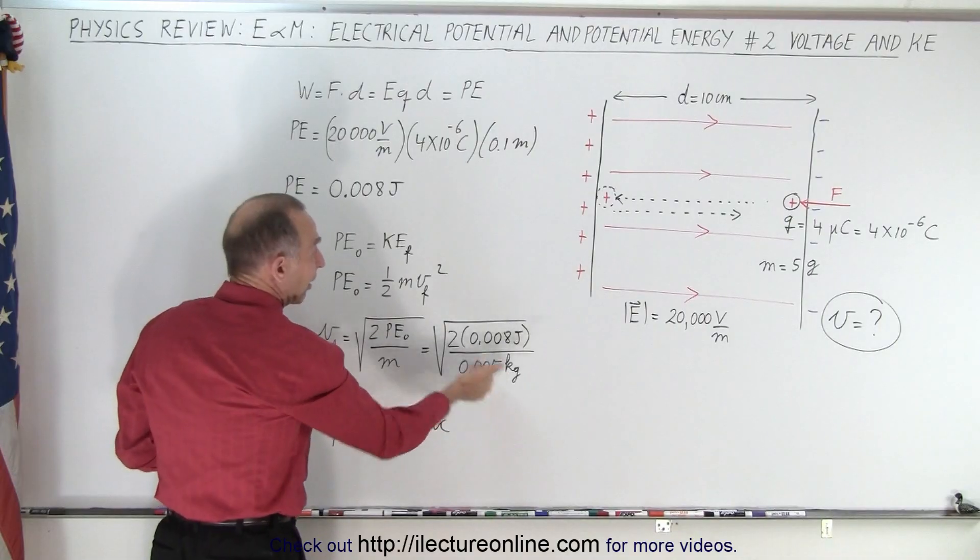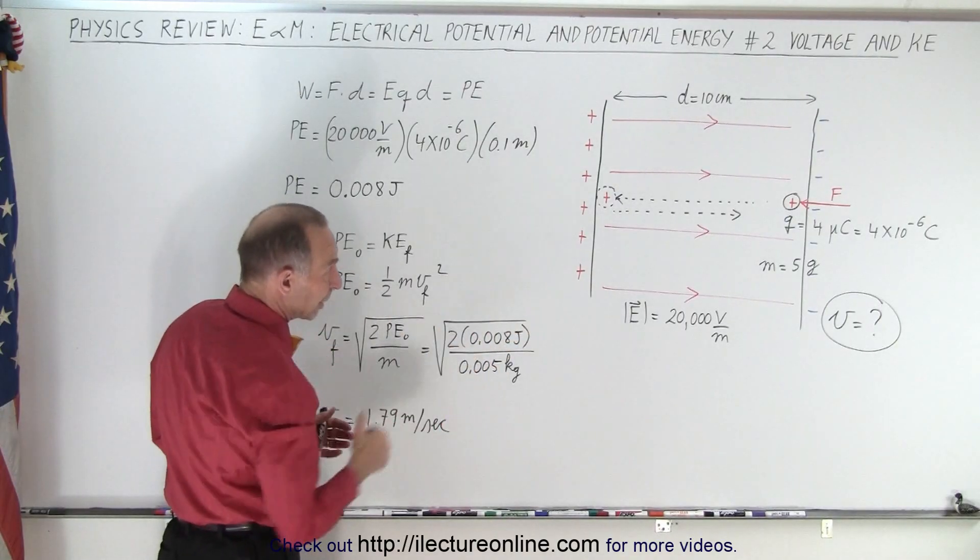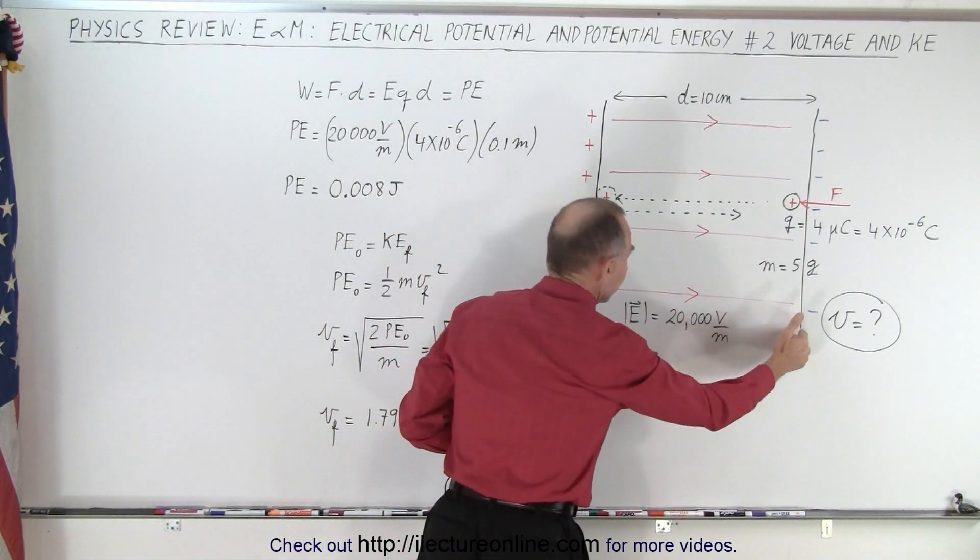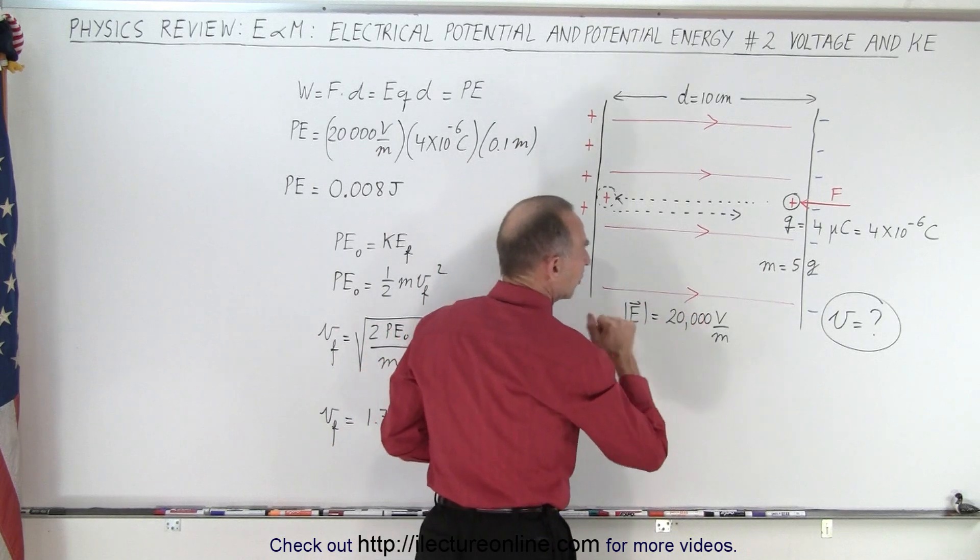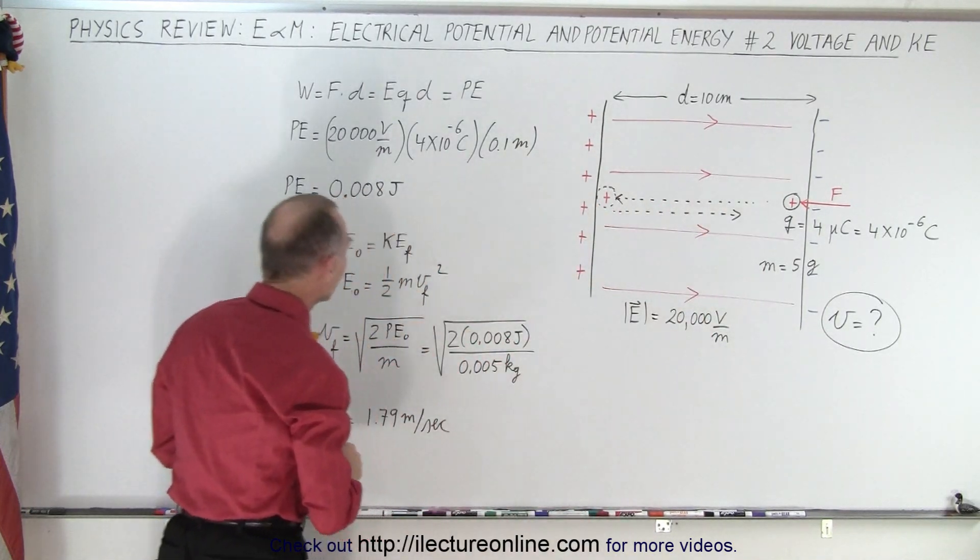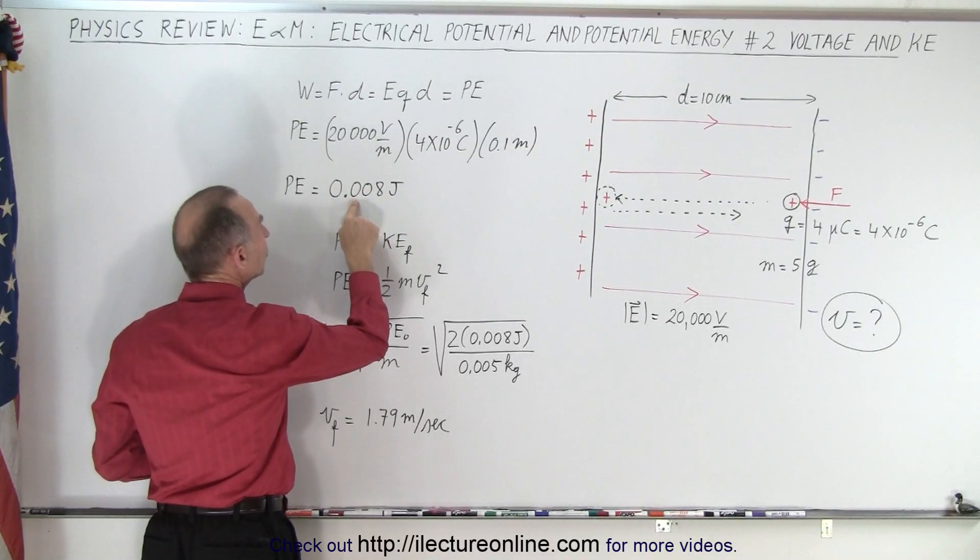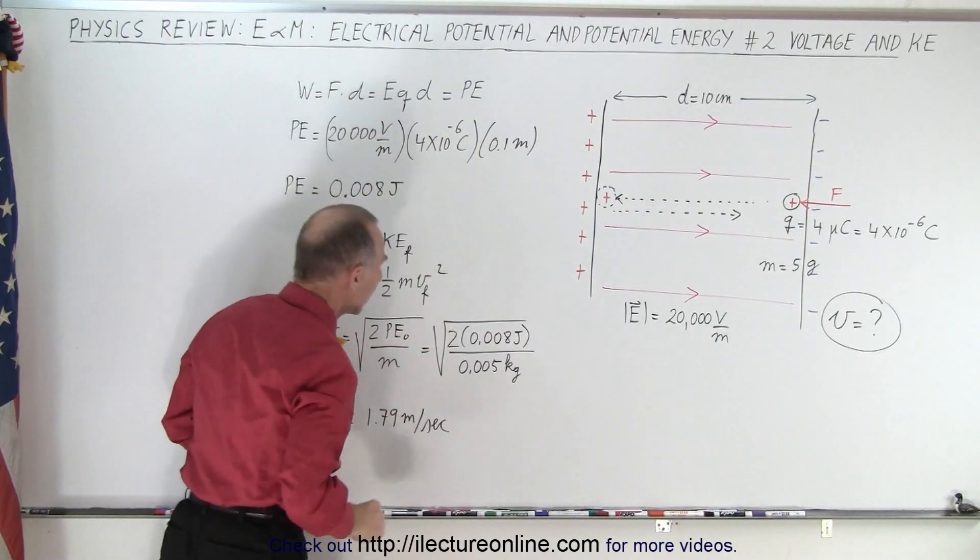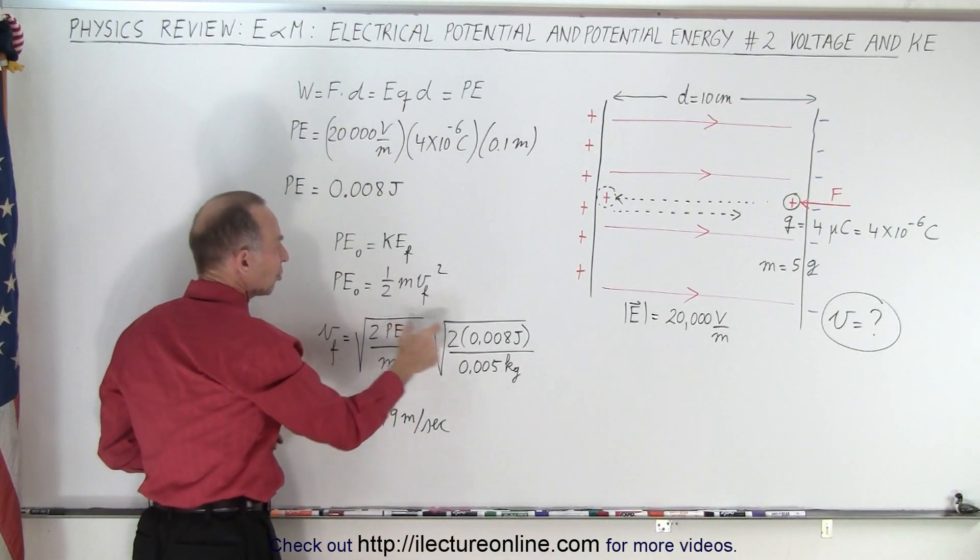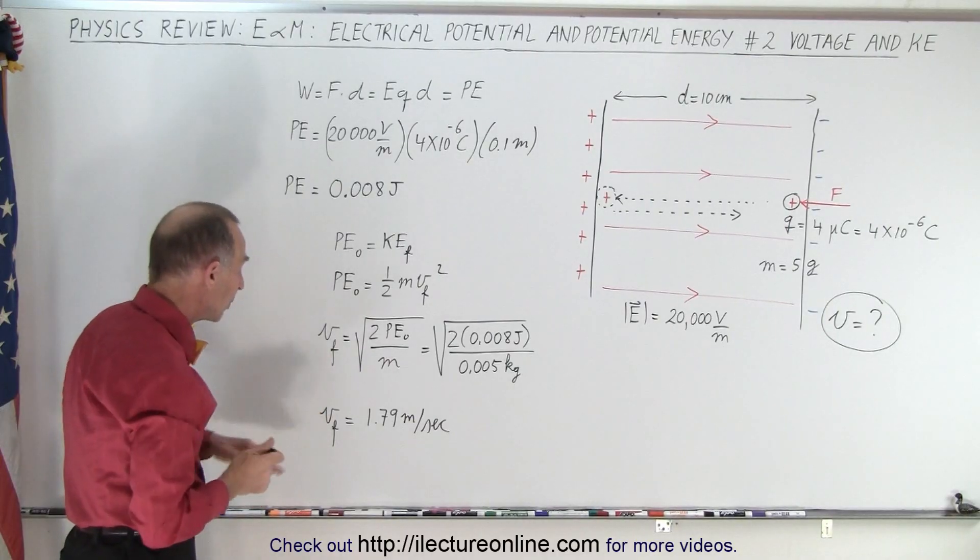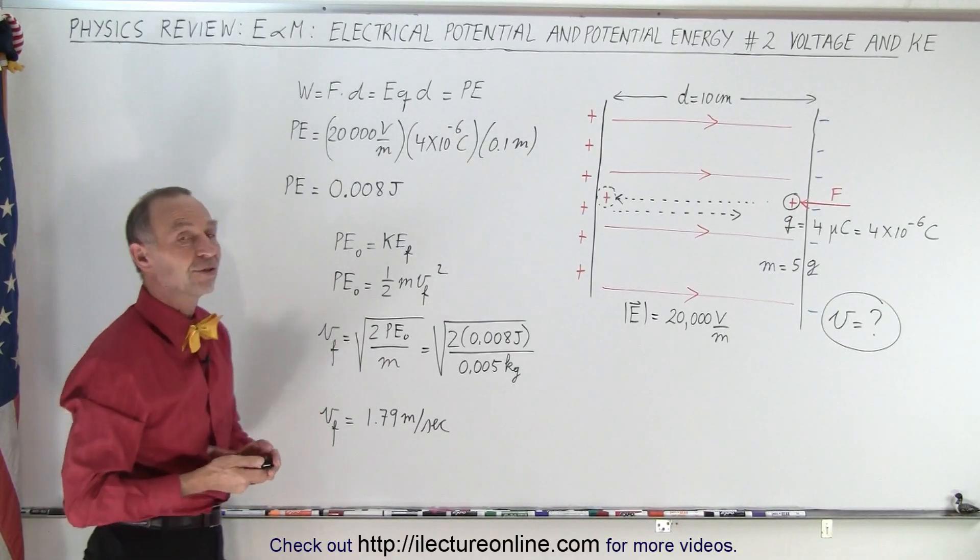Let's say that the mass is five grams, as defined by the drawing there. And since the electric field strength was 20,000 volts per meter and the distance between the plates was 10 centimeters, we're able then to calculate the potential energy gained simply by multiplying E times Q times d. And that then becomes the potential energy, which is 0.008 joules. We work it out and we get 1.79 meters per second.